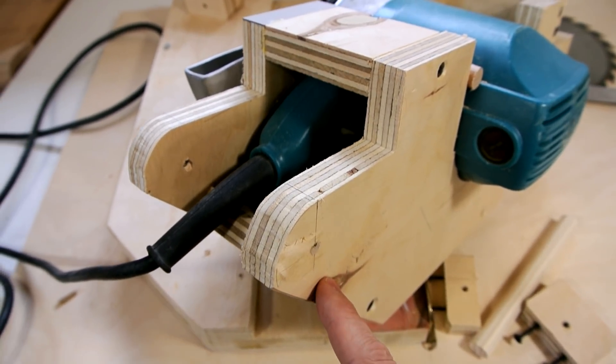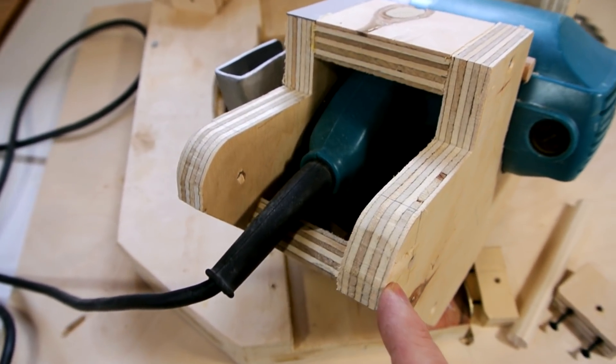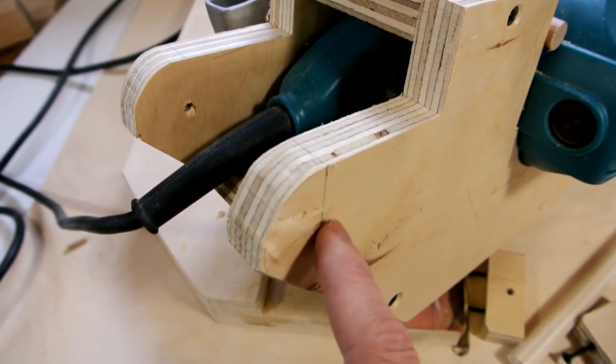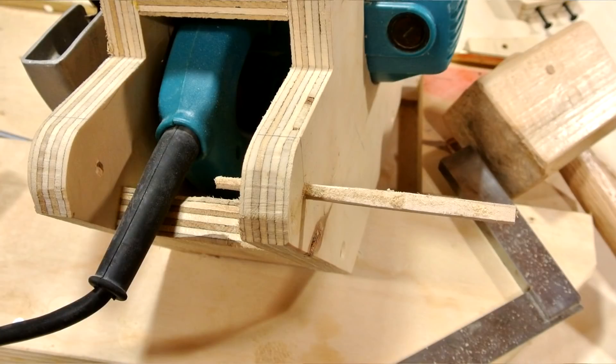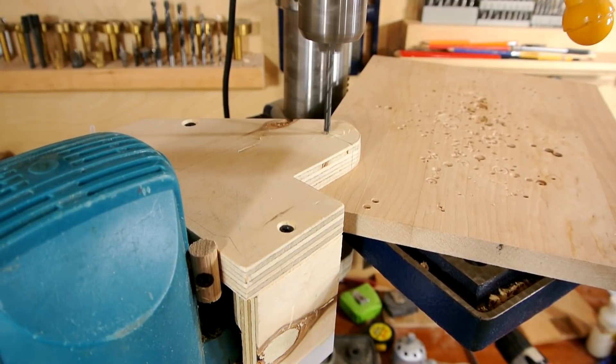When I tried out the saw and changed the depth adjustment, I found some alignment problems. I had this hole in the wrong place, so I just glued a plug in there. Now I can drill it again, hopefully in the right spot.